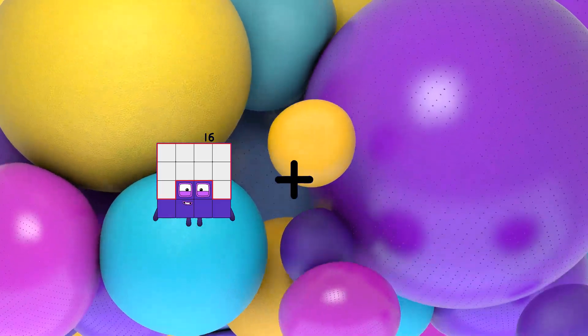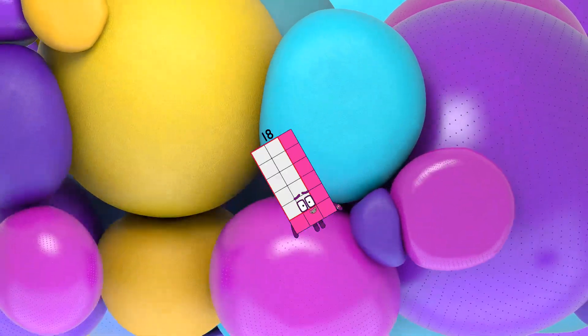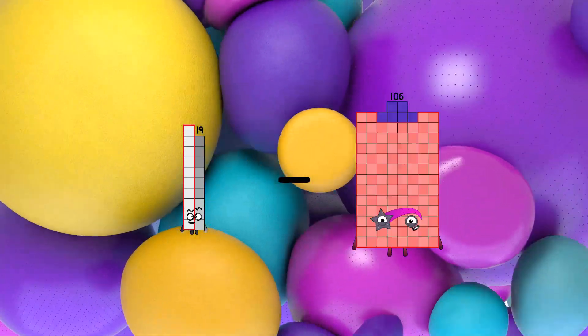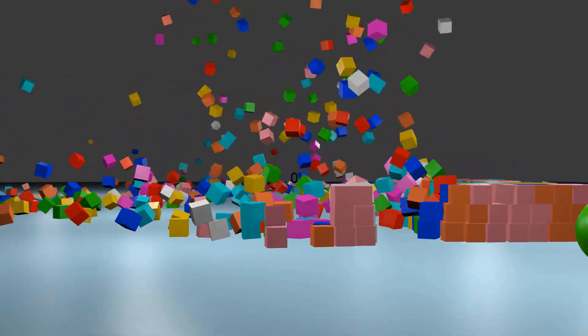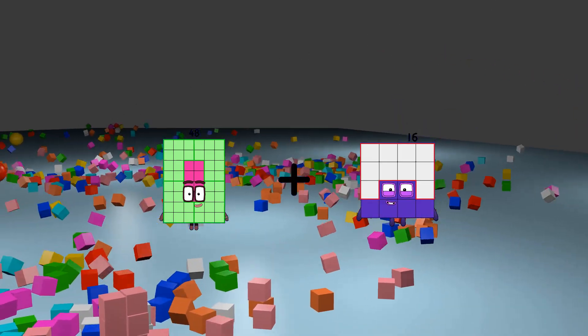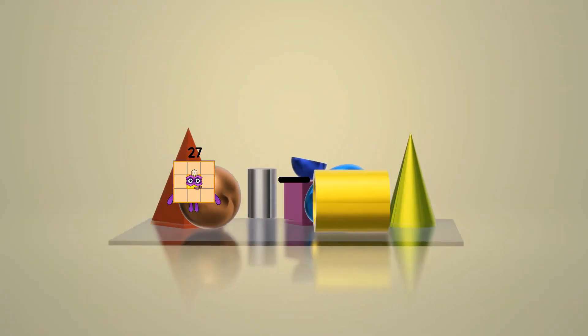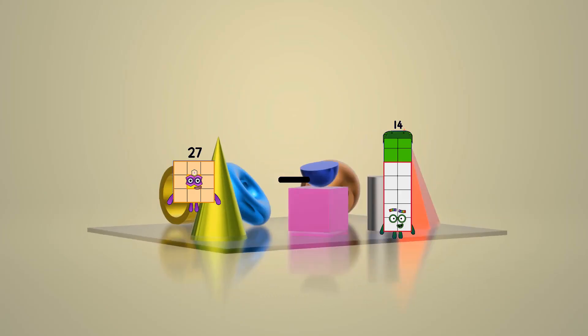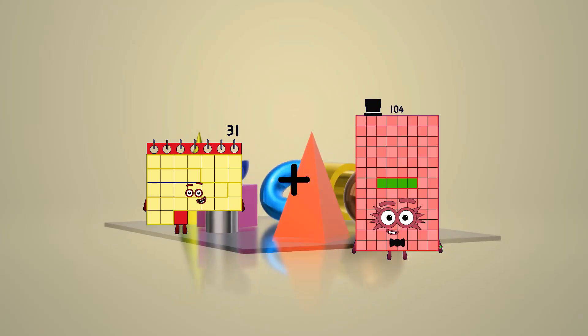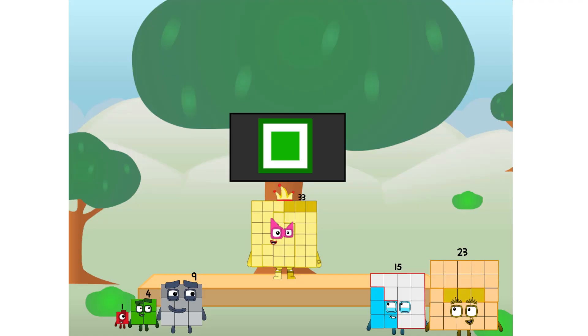16 plus 2 equals 18, 19 minus 19 equals 0, 48 plus 16 equals 64, 27 minus 3 equals 24, 31 plus 3 equals 34.